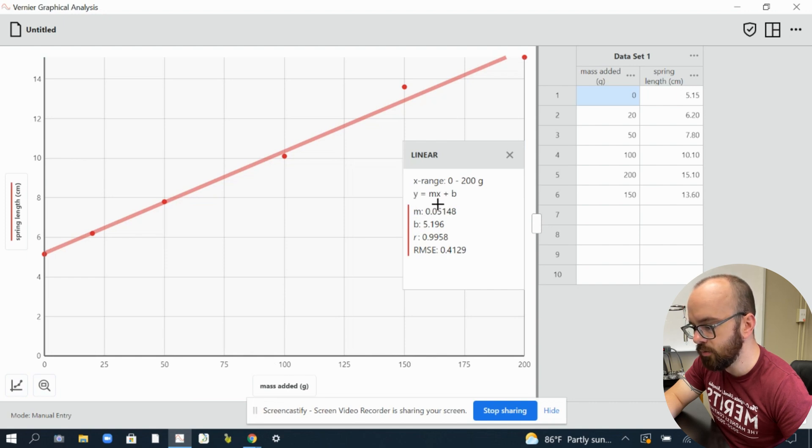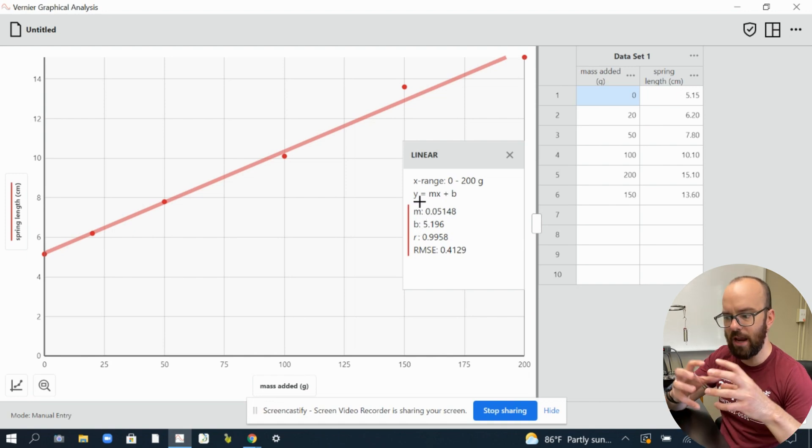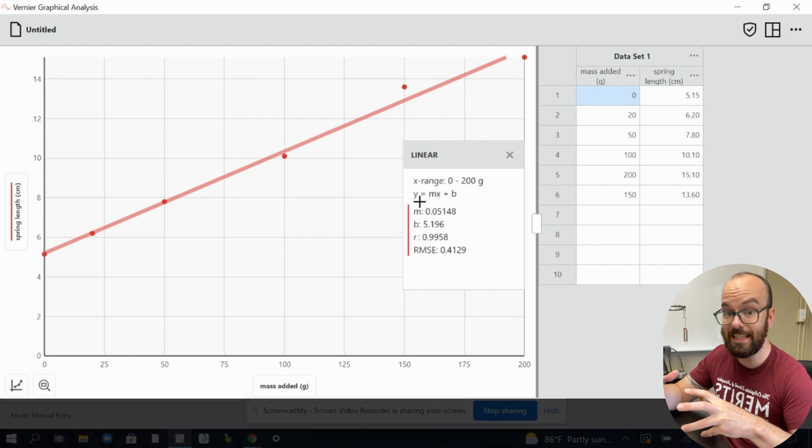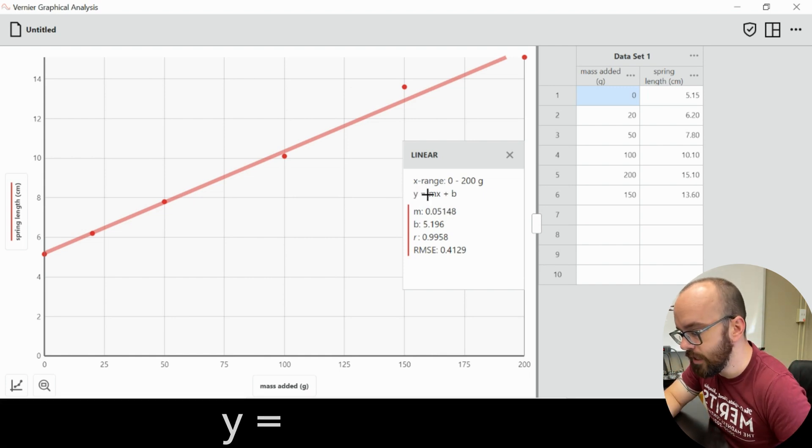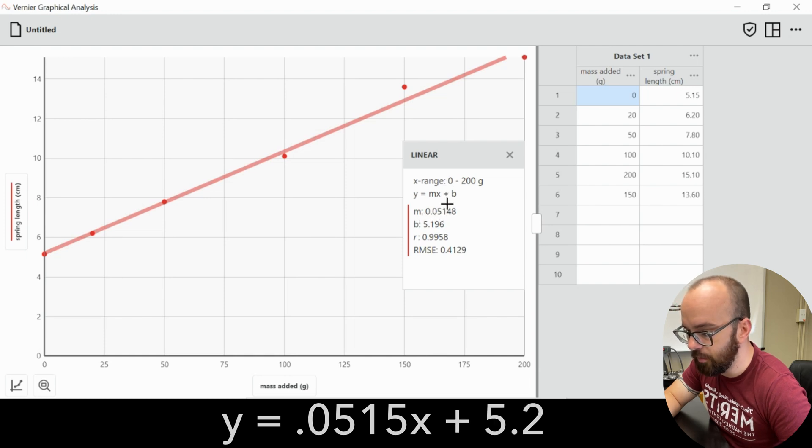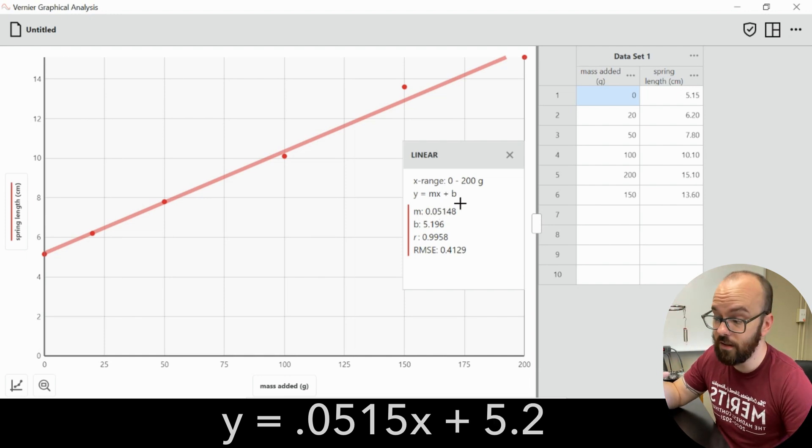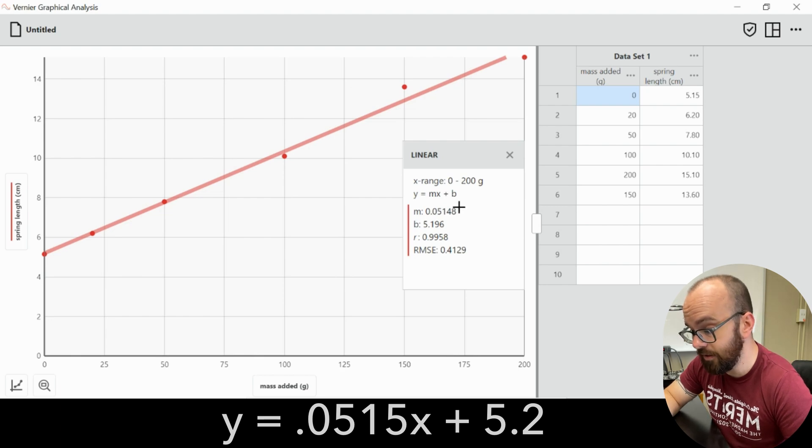But it doesn't actually write those out into one equation. So I would need to take these values and then write out my equation. And I would write out Y equals 0.05148, pretty close to what we had X plus 5.196 or 5.2. So I got basically the same thing again, this time using Vernier graphical analysis.